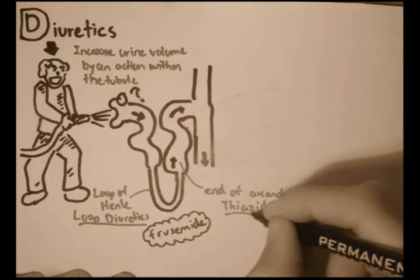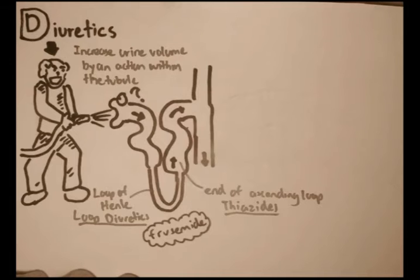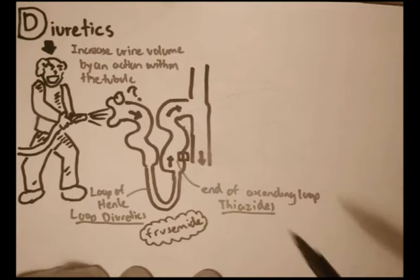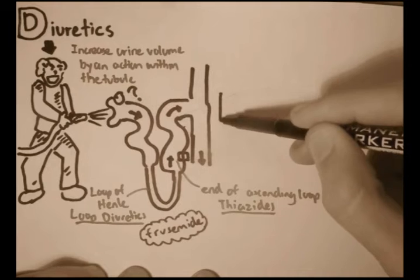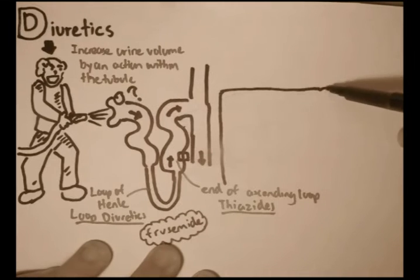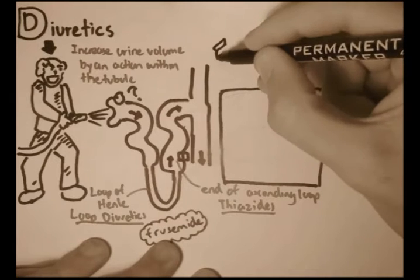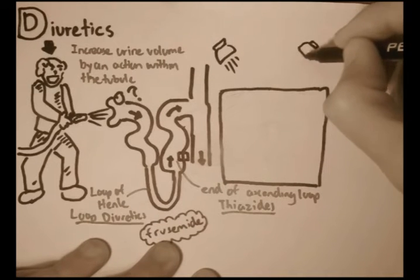Thiazides. Now they're very similar. They work very similar within the tubules. They affect within the tubules. And we'll talk about the thiazides. So we'll zoom into this section here, in between the blood vessels and the inside of the tubule. So we'll zoom in, and we'll rotate it 90 degrees for simplicity.